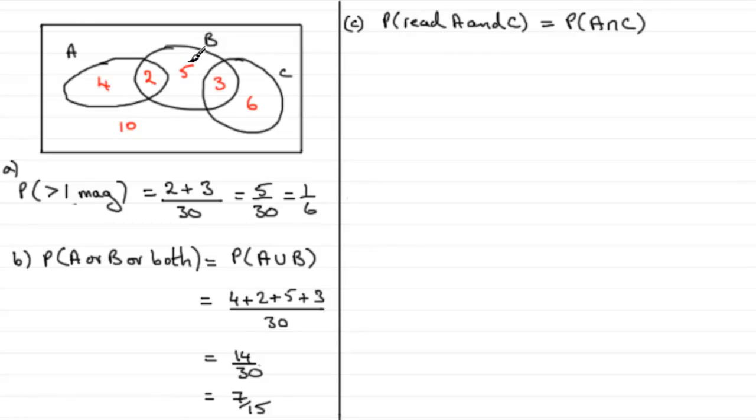Probability of A and C. How many students read A and C? Well, this is clearly zero because there's no overlap between A and C. So it's zero out of thirty. Or just simply zero.